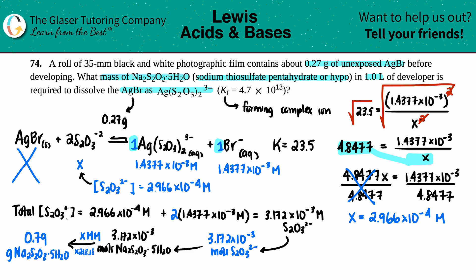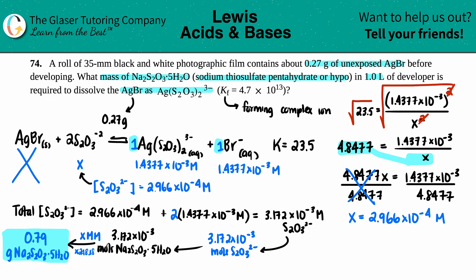The tricky part was knowing to take the S₂O₃ from both sides of the equation, mainly because the complex ion forms and that's part of the equilibrium. Hope this helped — let me know in the comments. Good luck on your future tests and quizzes, and I'll talk to you in future lessons. Have a great day!